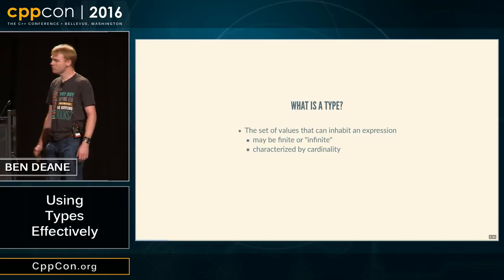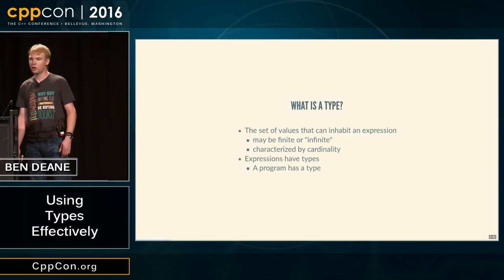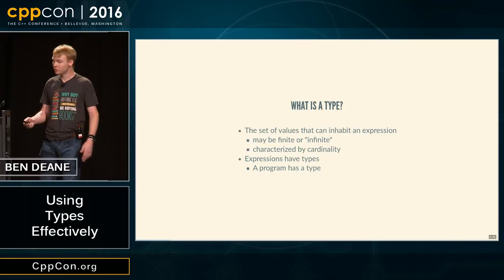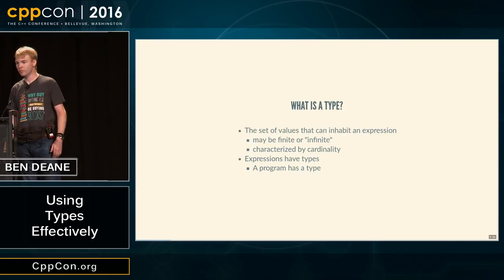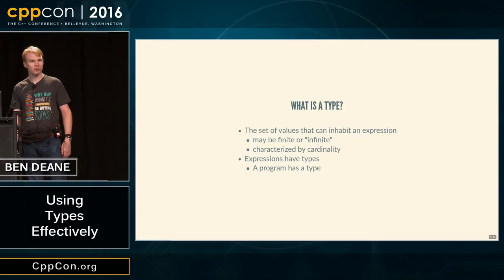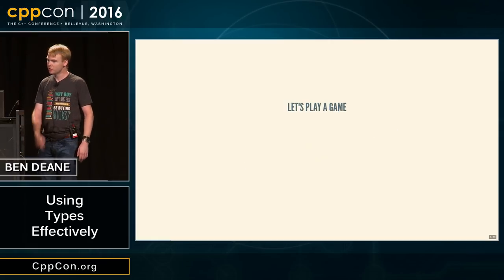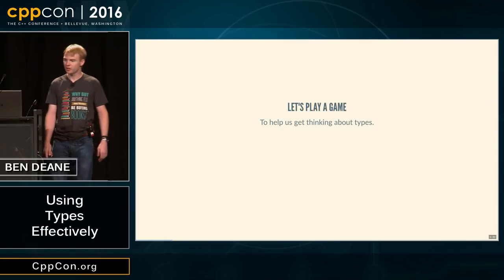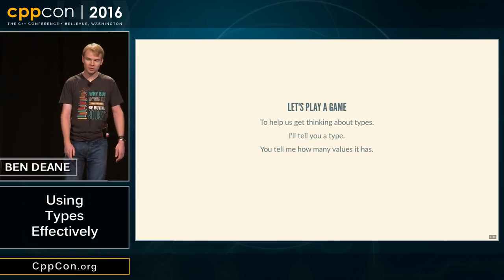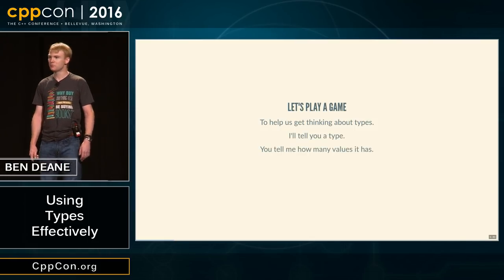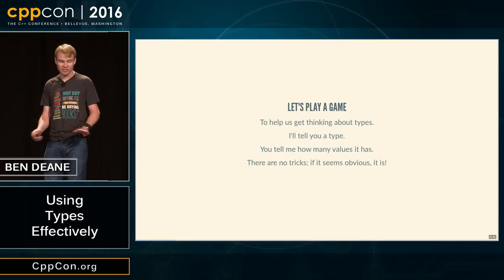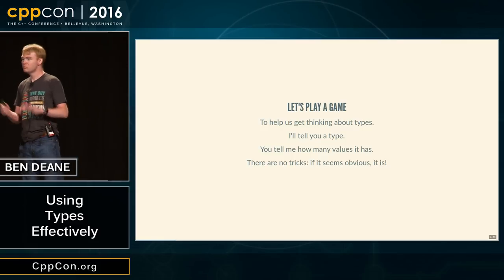Types in this sense are static — they are things that expressions have, and therefore things that programs have. I'd mark this talk as a tutorial, because you're going to do some work here. Let's play a little game to help get us thinking about types. I'll tell you a type, and you're going to tell me how many values it has — how many things can fit in that bucket. There are no tricks here.